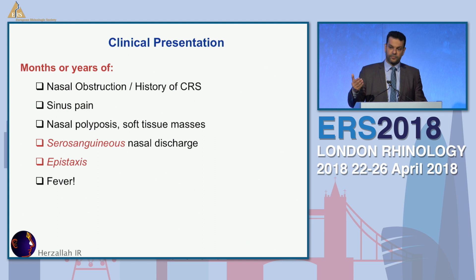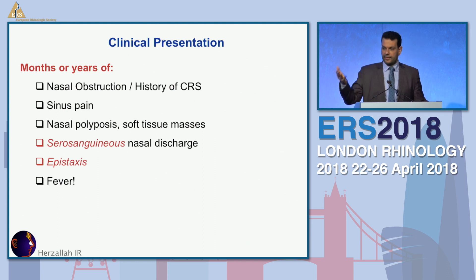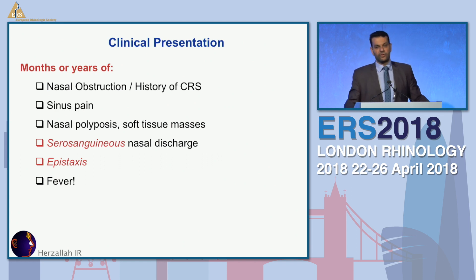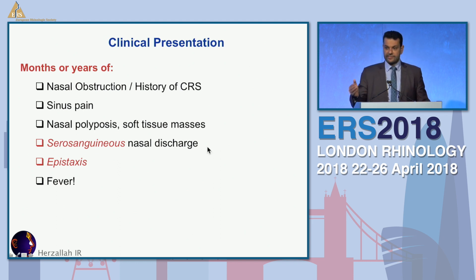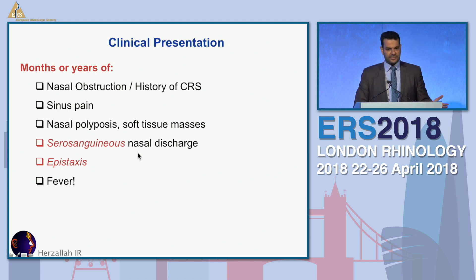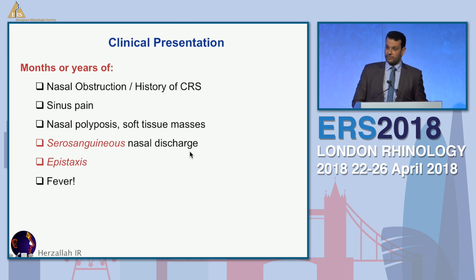How the patient presents is basically just a sinus case. Most of these patients come to the clinic like CRS or polyp cases, and you don't really know they are something different. Then the patient may develop an alert symptom such as serious angiosis discharge, which doesn't happen with normal polyps, or some unusual epistaxis, prompting you to think this might be something different.